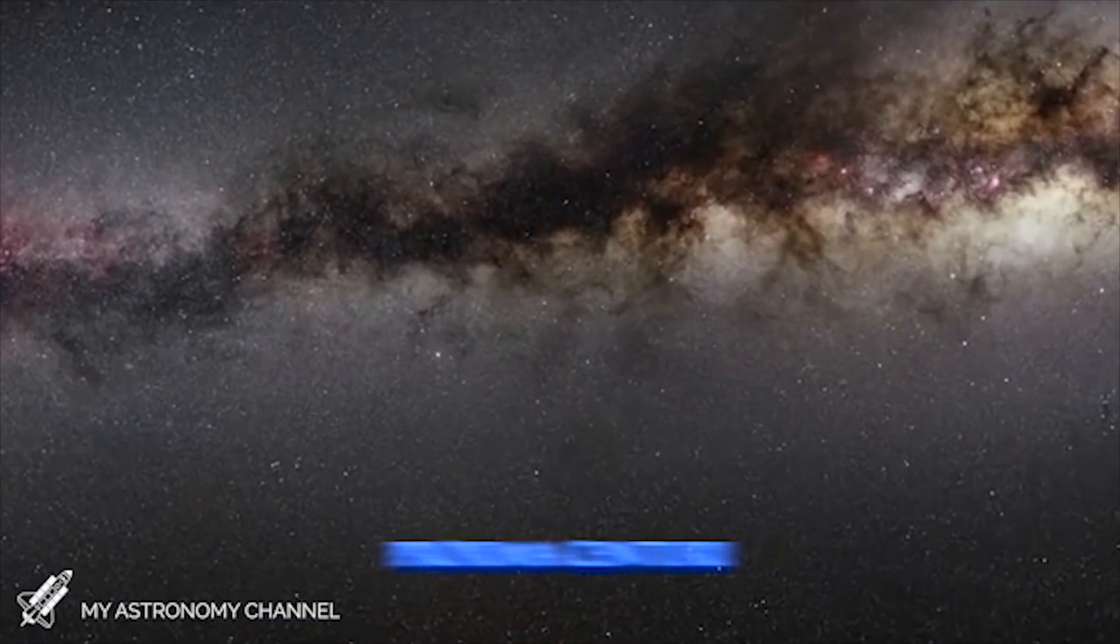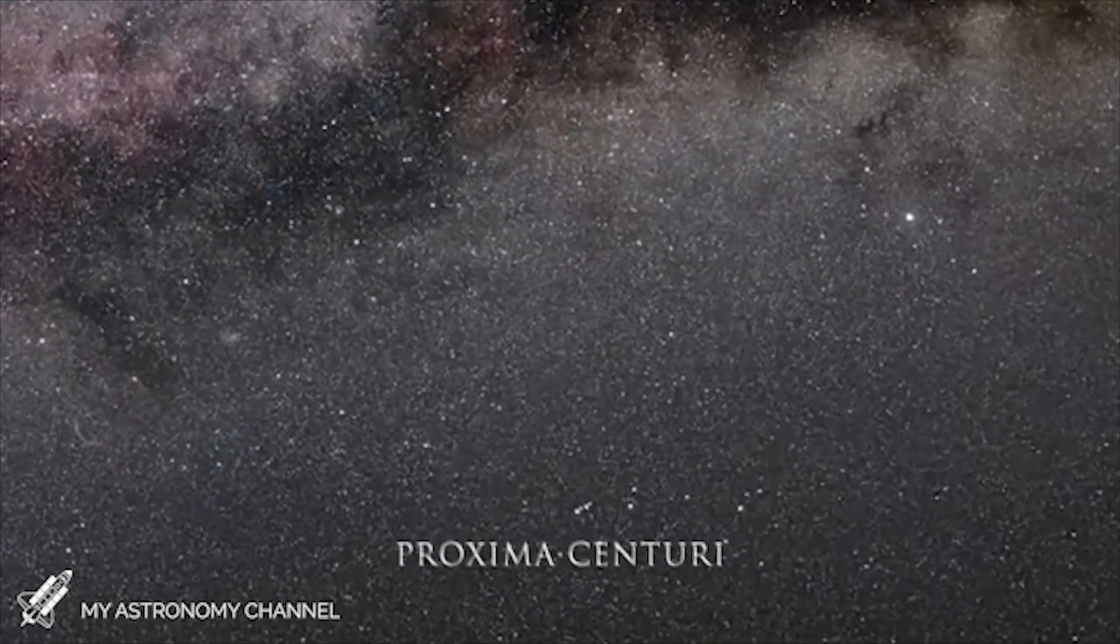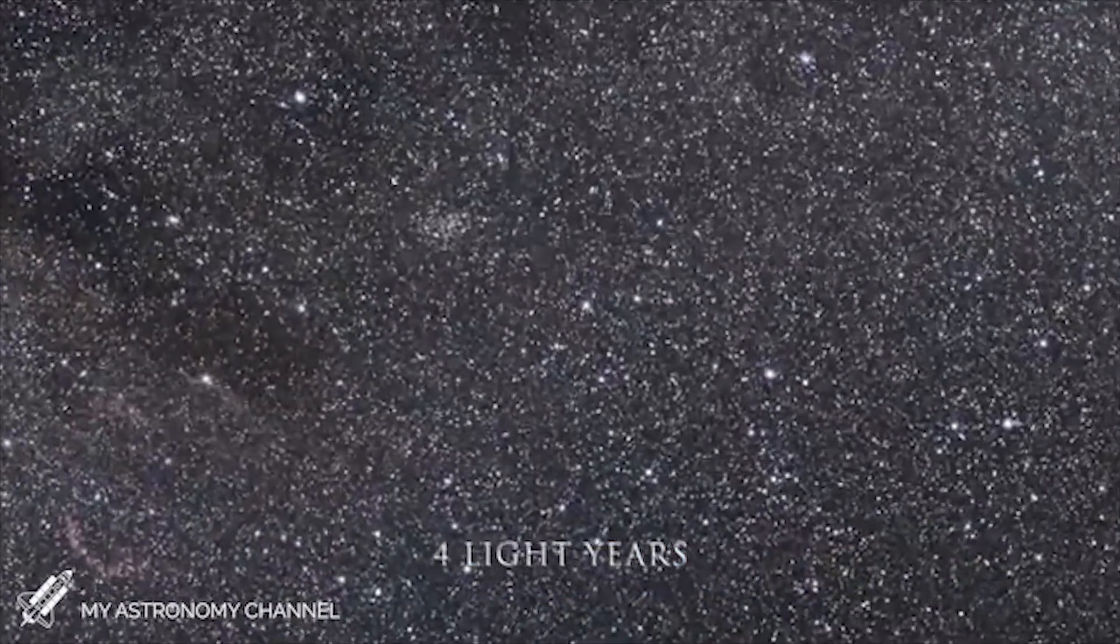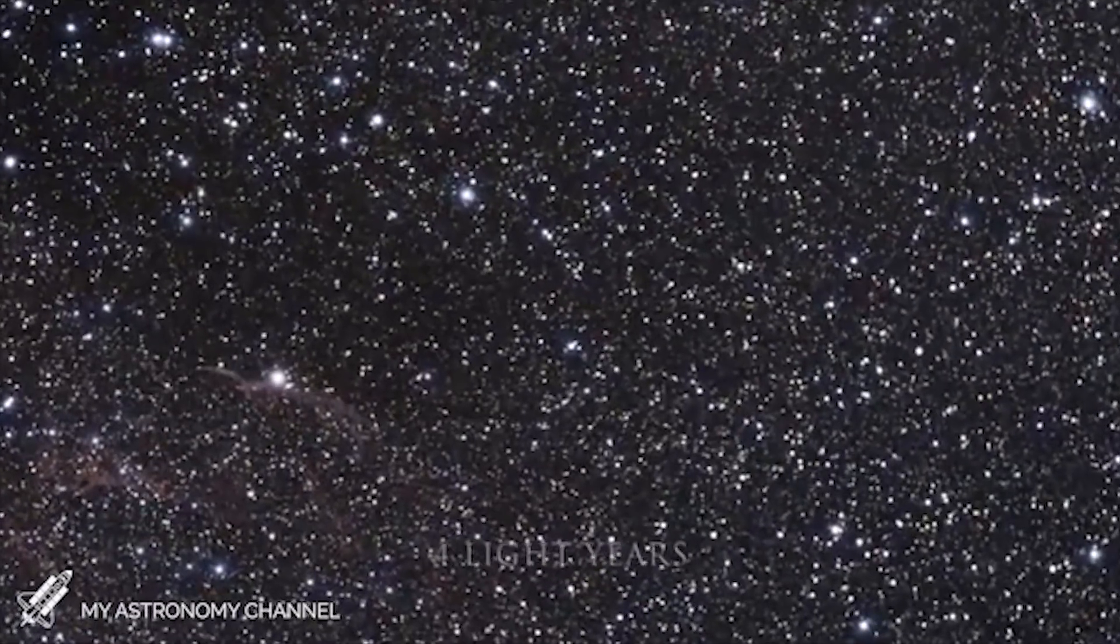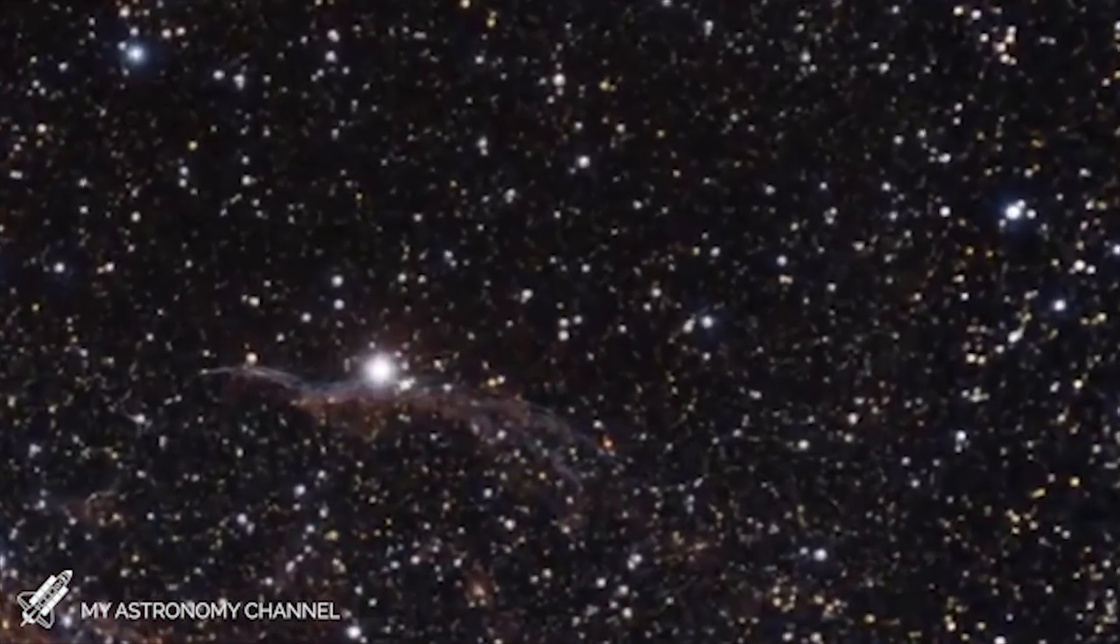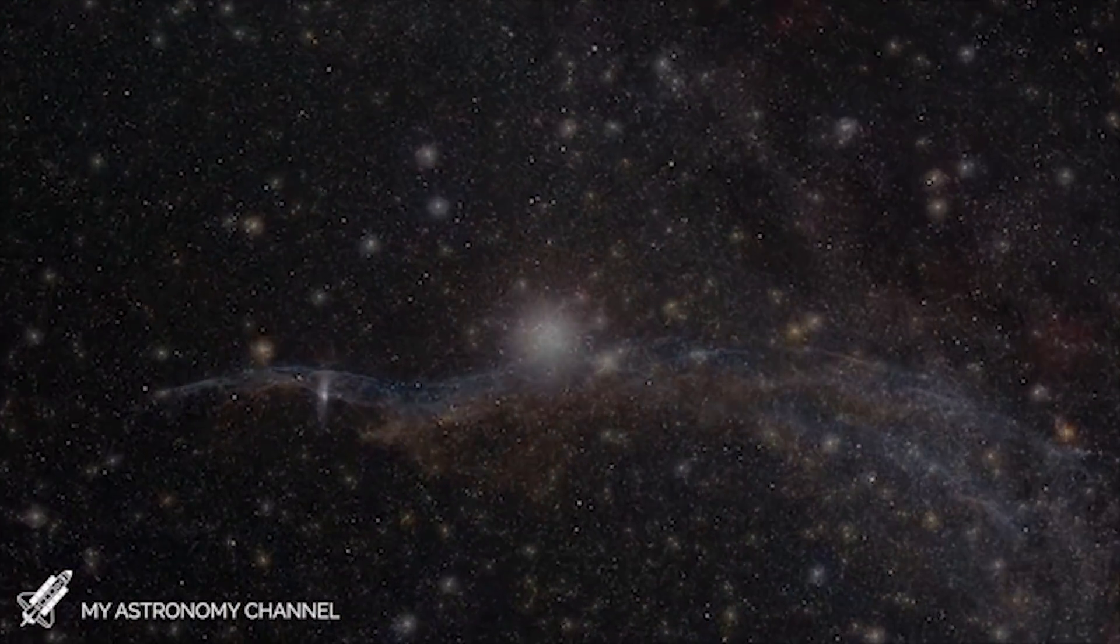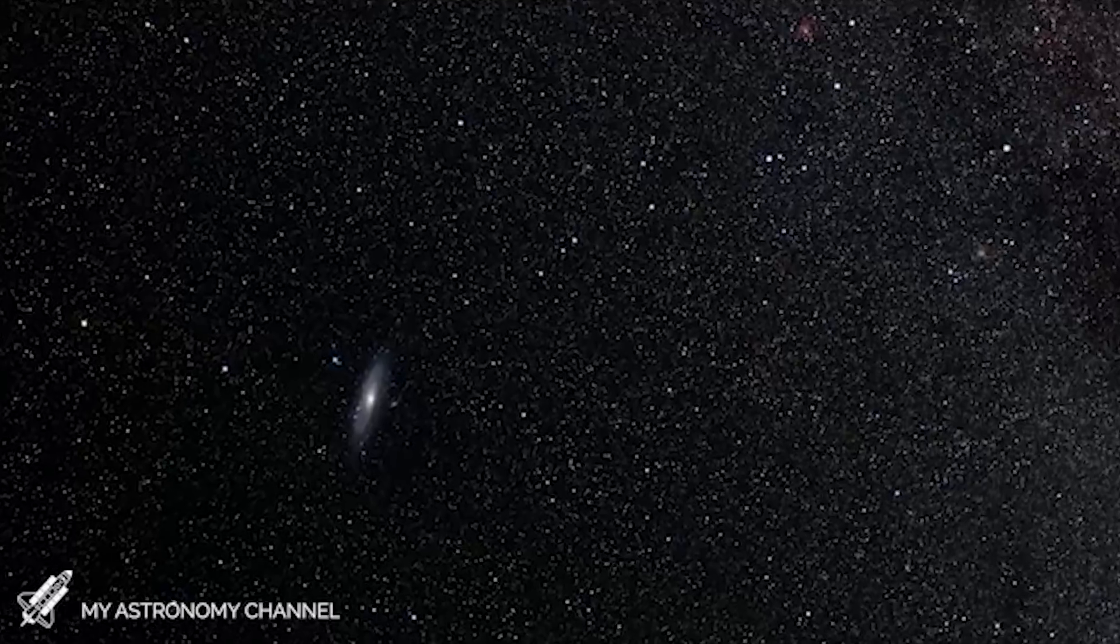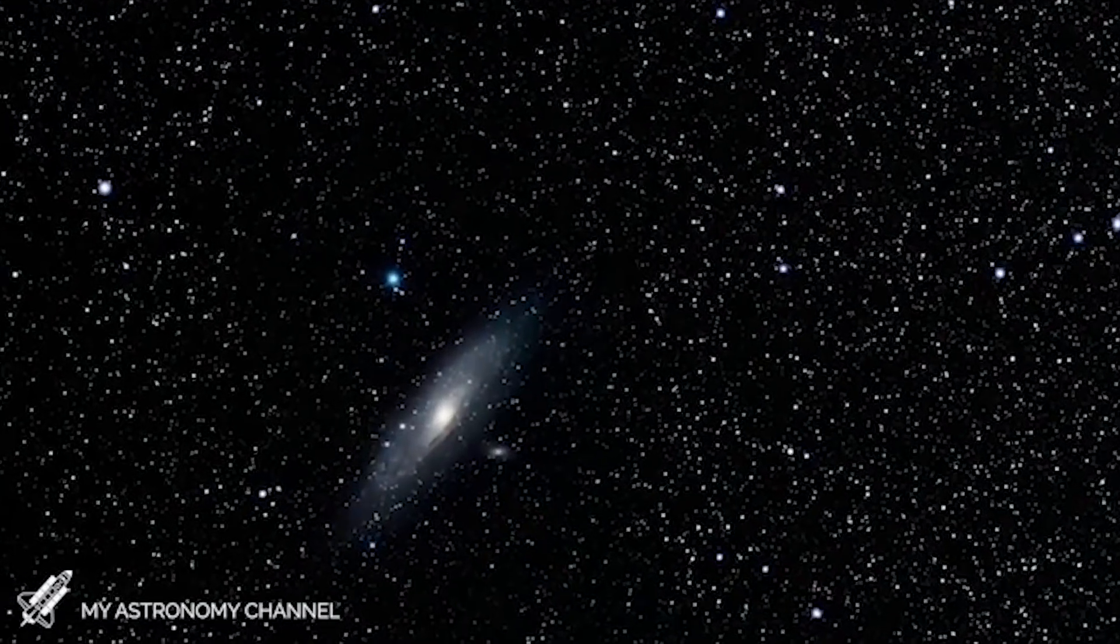Light that leaves our second nearest star, Proxima Centauri, takes just over four years to reach Earth, and so we can define it as four light years away. As such, if you were to look at Proxima Centauri, you would not be seeing the star as it is right now, but how it was four years ago. We see all things in the universe as they were in the past, whether they're on the other side of the room or the other side of the galaxy.